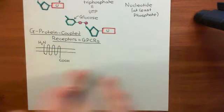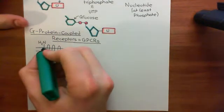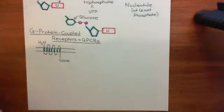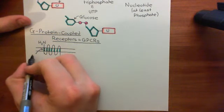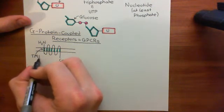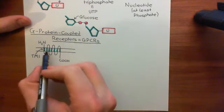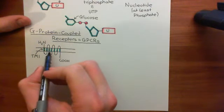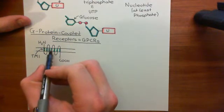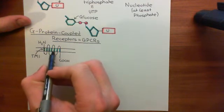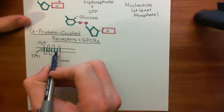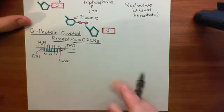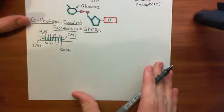Let's discuss the basic structure of G-protein coupled receptors because there is some nomenclature I'd like to introduce. We'll start with the seven membrane-spanning alpha helices, now highlighted in turquoise. The first one, closest to the amino terminus, is known as transmembrane domain 1, or TM1. The second is TM2, the third TM3, the fourth TM4, the fifth TM5, the sixth TM6, and the seventh is TM7 for transmembrane domain 7. That's just the naming of the different transmembrane domains.